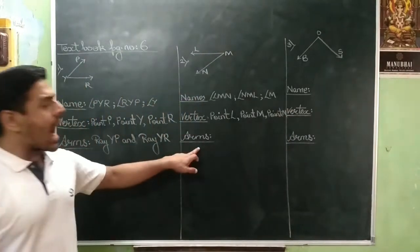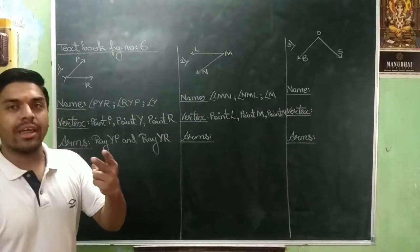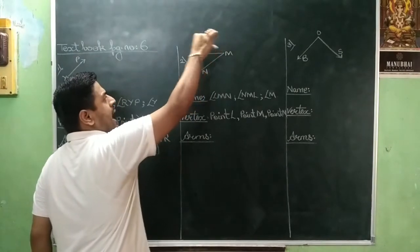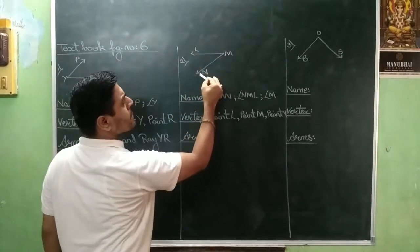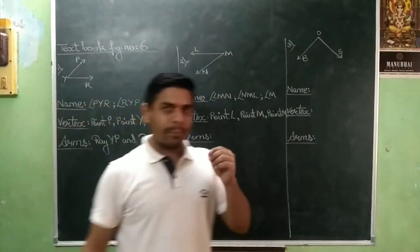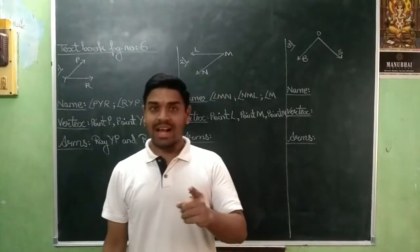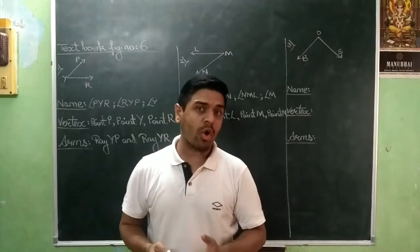Followed by arms. Now which are the two rays? The first ray is ray M, L. And second ray is ray M, N.